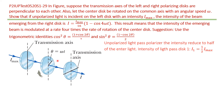For unpolarized light passing through a polarizer, the intensity is reduced to half of the incident light. So the intensity of the light after the first disk is I₁ equal to one half of I-naught, and this light will be polarized.